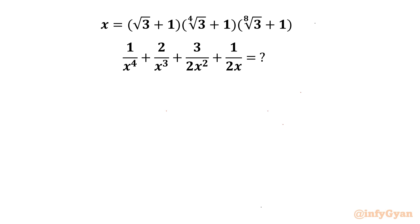Welcome back to Infigure, my dear friends. Today in this video we are going to take up another challenging question from Radical Mathematics. x is equal to (root 3 + 1) times (4th root 3 + 1) times (8th root 3 + 1). Then we have to evaluate 1 over x⁴ plus 2 over x³ plus 3 over 2x² plus 1 over 2x. So let's get started by writing x.